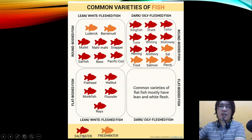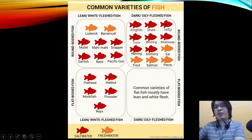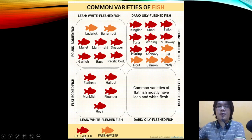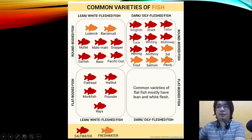Some fish come from salt water as a resource. The dark oily flesh fish, which is also round-bodied, includes kingfish, shark, tailor, tuna, mulloway, herring, and anchovy — all coming from saltwater sources. Eel, trout, salmon, and perch are also round-bodied dark oily flesh fish, but they come from freshwater sources.